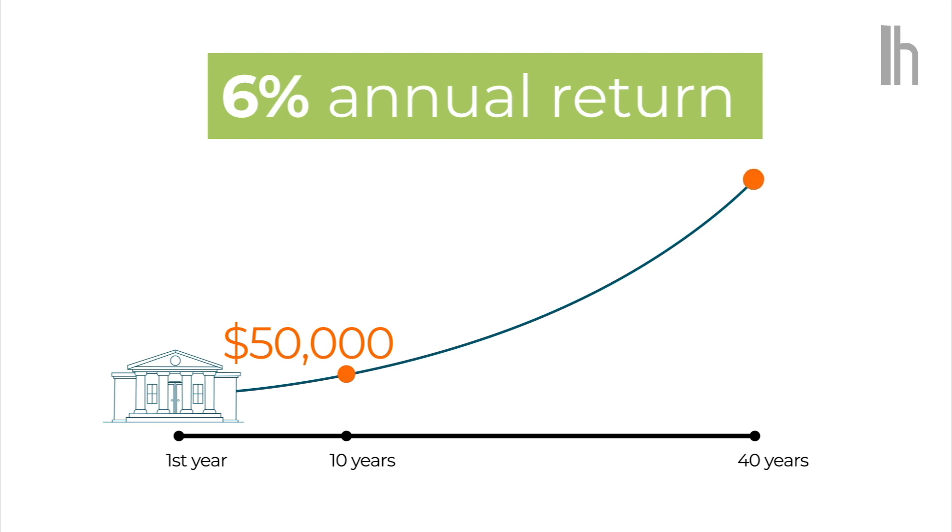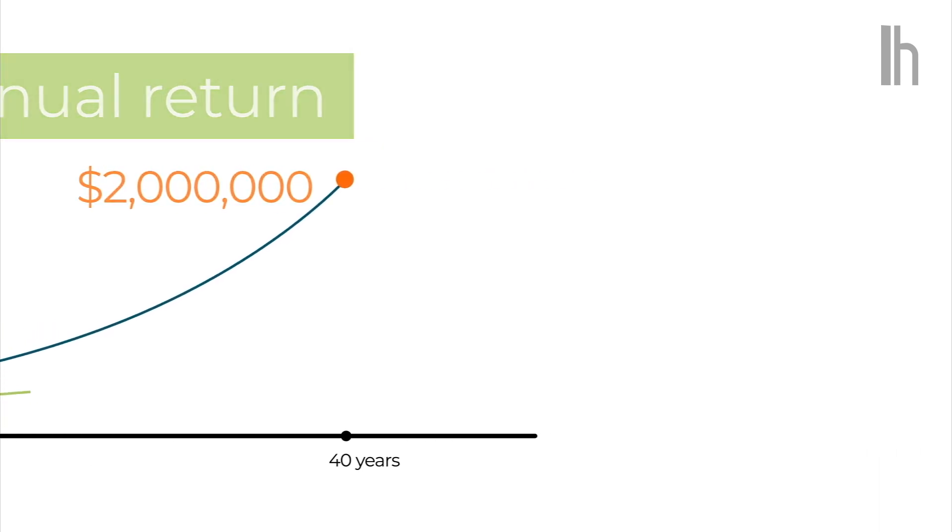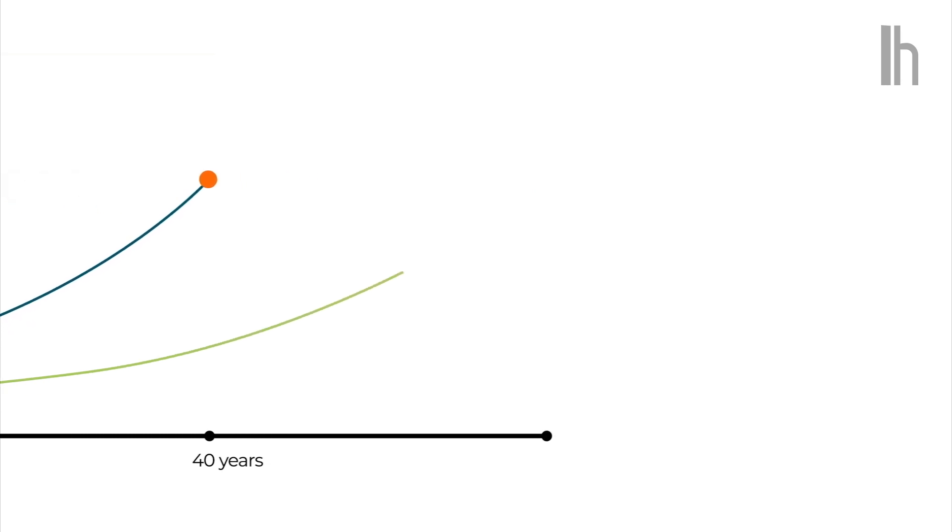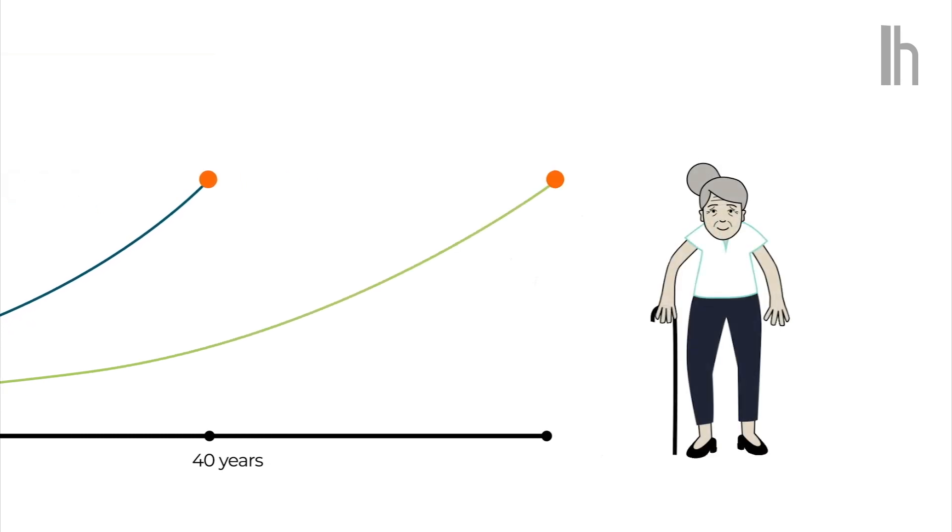And after 40 years, he'd retire with around $2 million more. To build an equivalent retirement nest egg, women must save $1.25 for every $1 a man saves, on average.